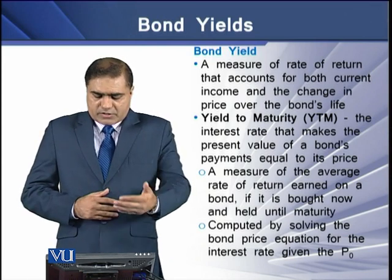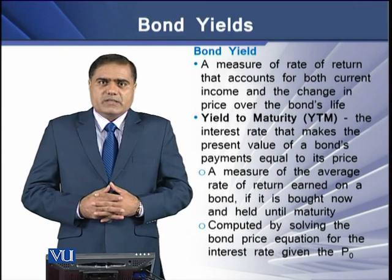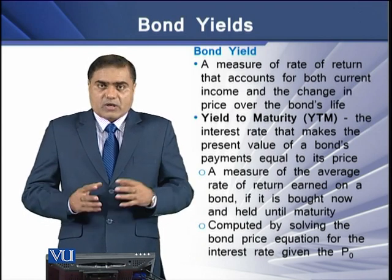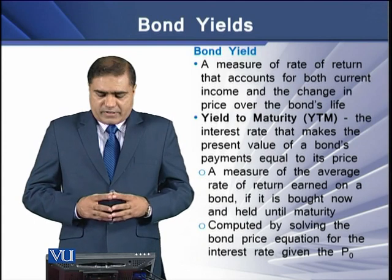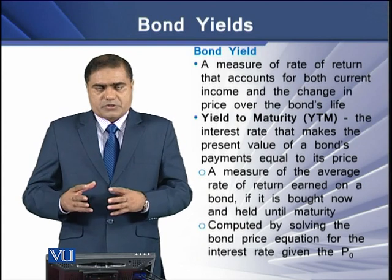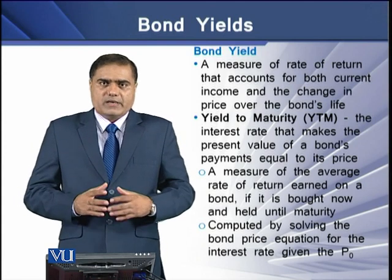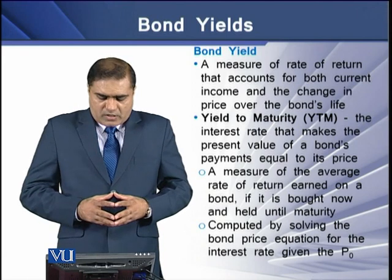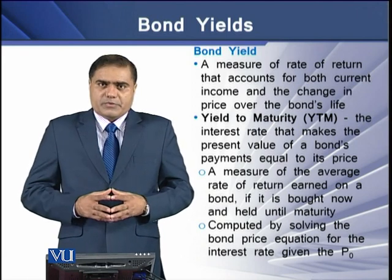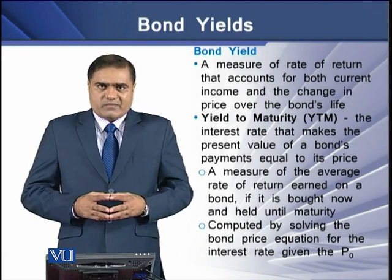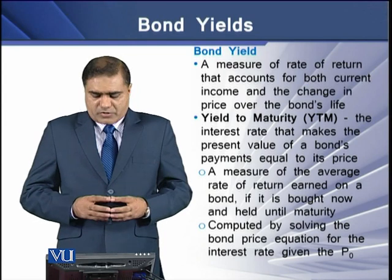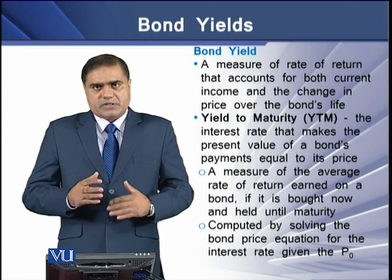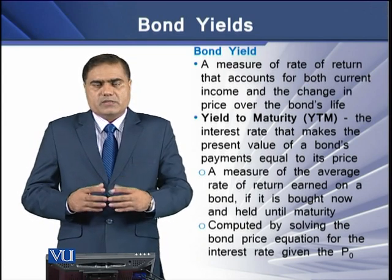Yield to maturity is the average rate of return that is earned on a bond if it is bought now and held till maturity. It is computed by solving the bond price equation for the interest rate, given the current market price.